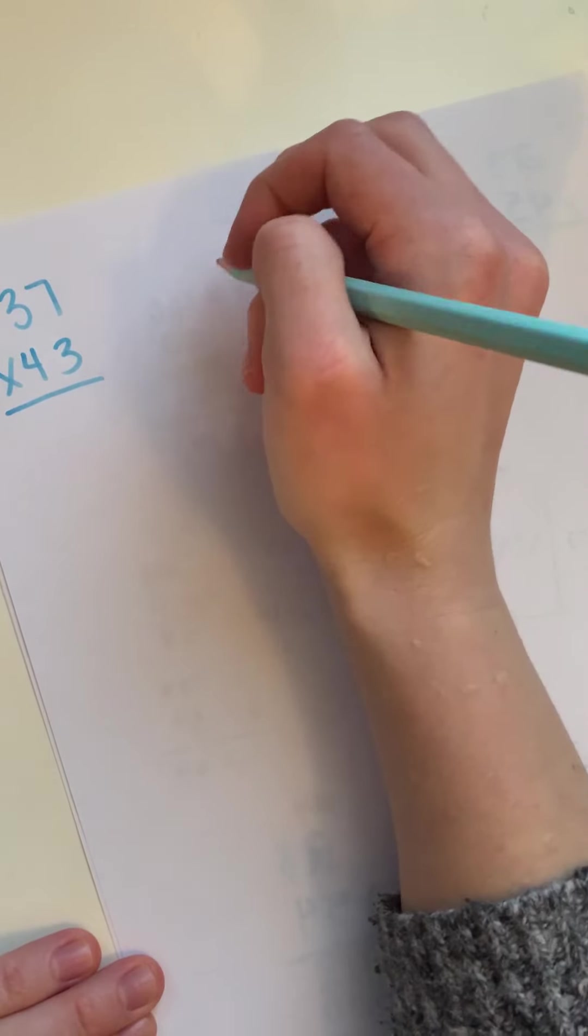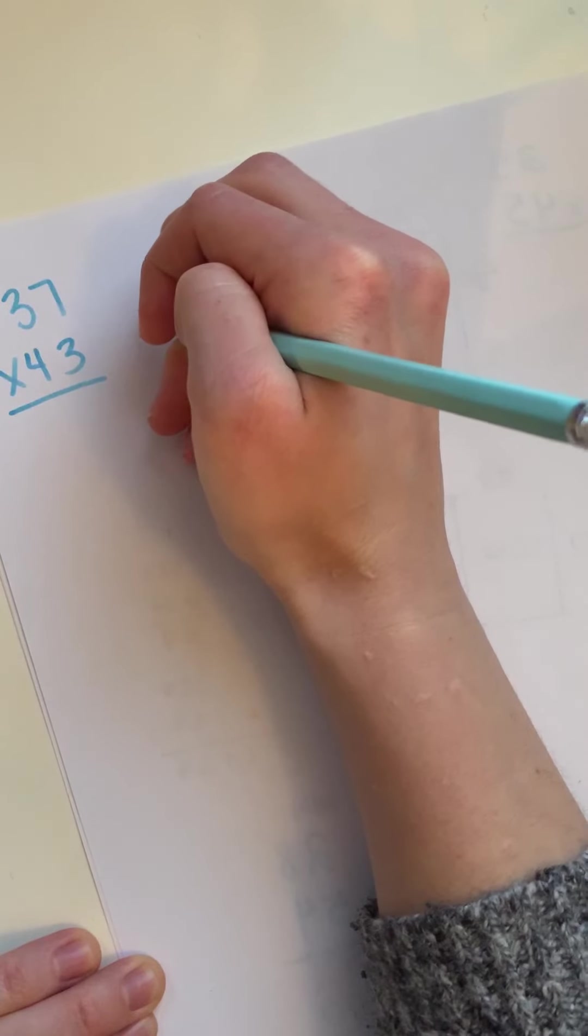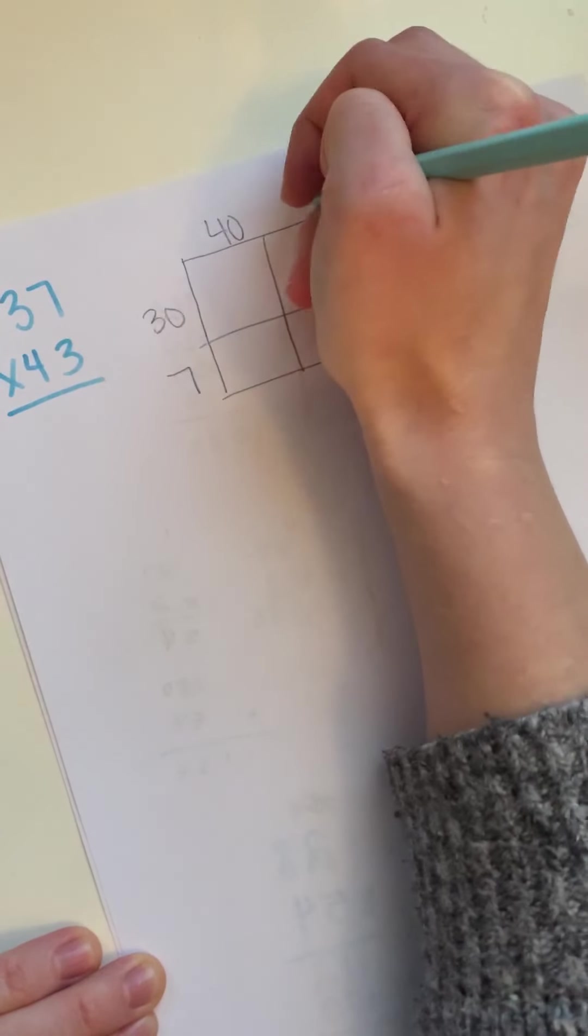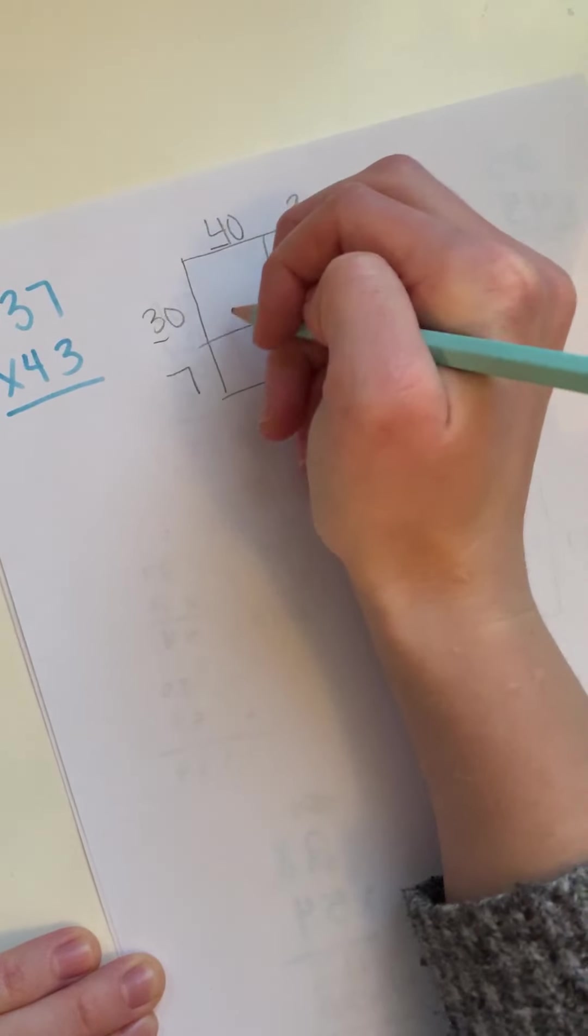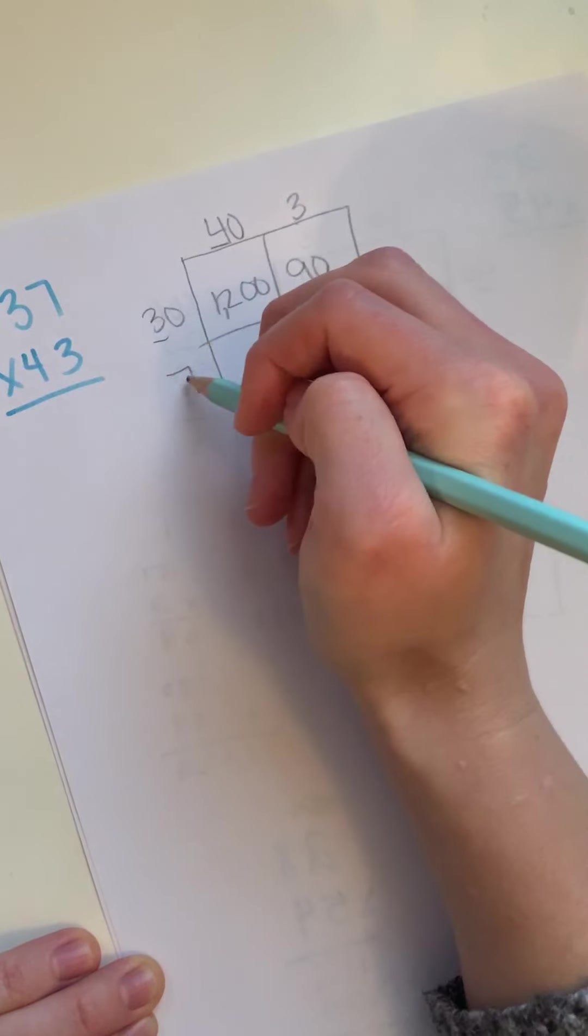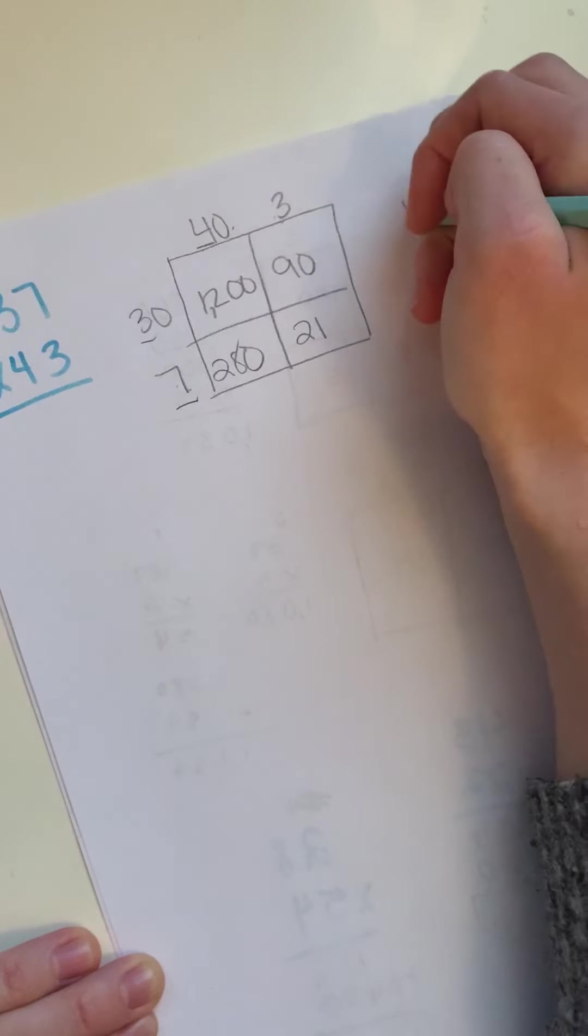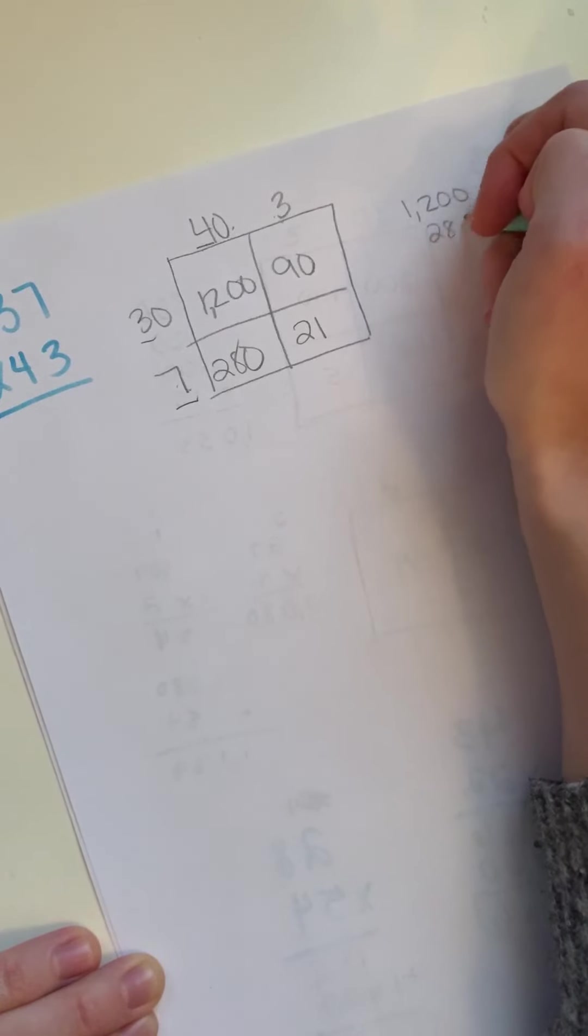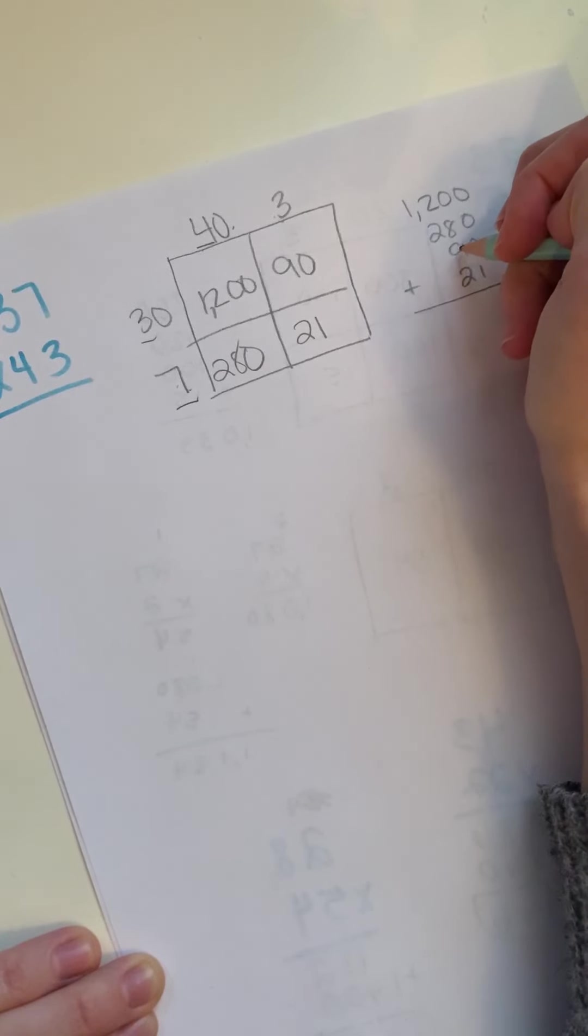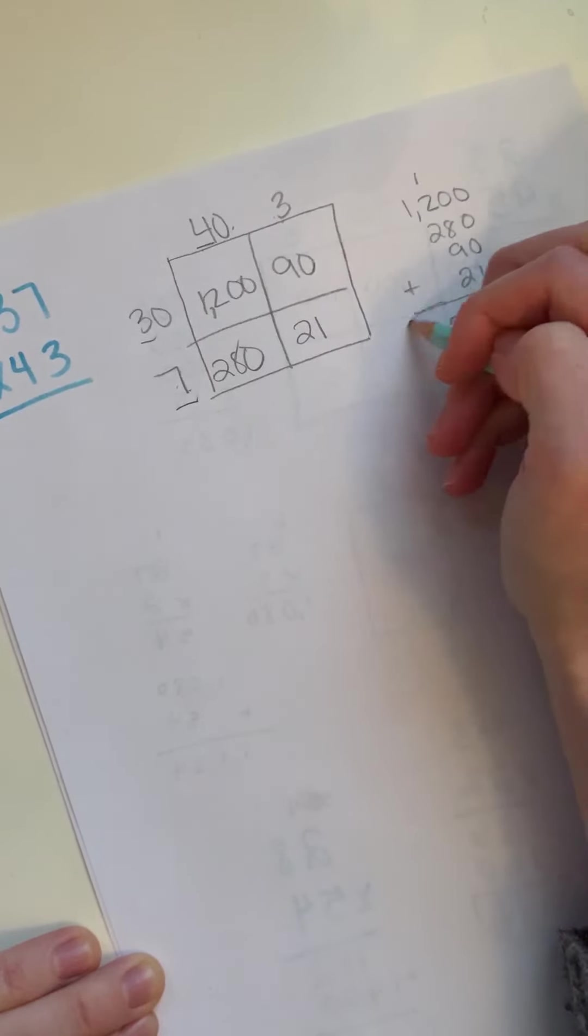So I have 37 times 43. And I'm going to go ahead and I'm going to make a 4 box. So I have 37 and 40 and 3. 3 times 4 is 12. Tack on 2 zeros. 3 times 3 is 9. Tack on 1, 0. 7 times 4 is 28. Tack on 1, 0. 7 times 3 is 21. Add all these together. That would be 19. 1,591.